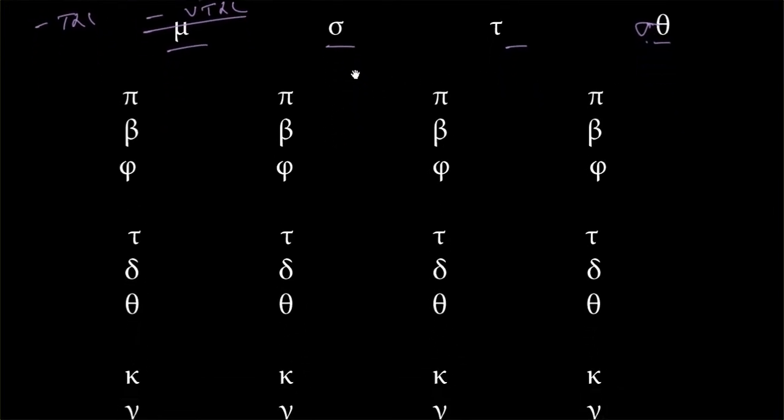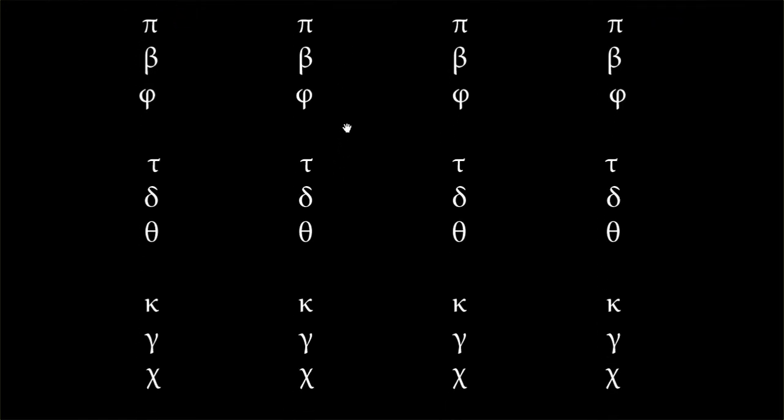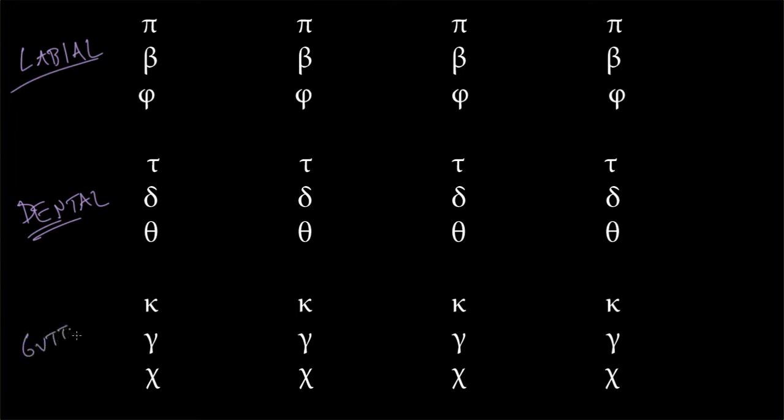So then why did Shalmerdine draw these big charts with these separated consonants? Because each of these falls into a category. These are what we call labials, because they deal with the lips from the Latin. These are going to be our dentals, because they deal with the teeth. And then these are the gutturals, dealing with the back of the throat.